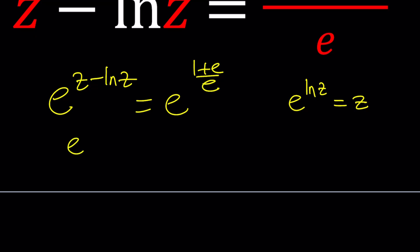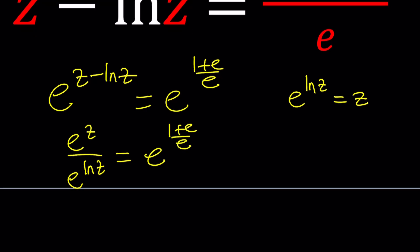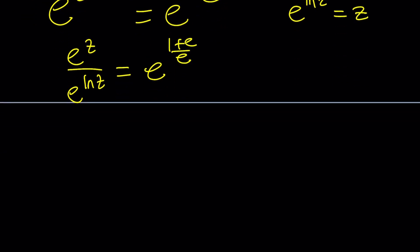So, now we get the following. E to the Z divided by E to the ln Z because of the power rules. And then we can write it as is on the right-hand side first. If needed, we can break it down later. But E to the ln Z is just going to be Z itself. So, this is Z.